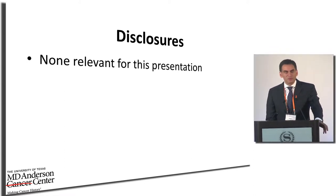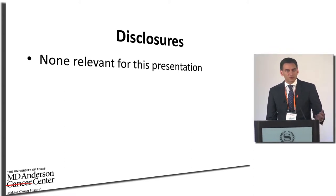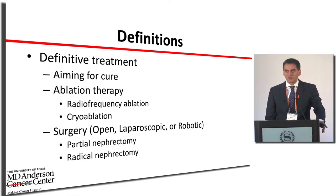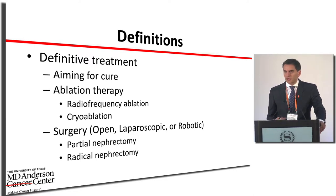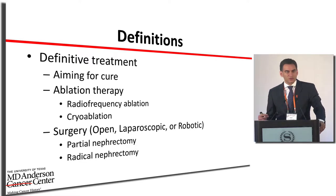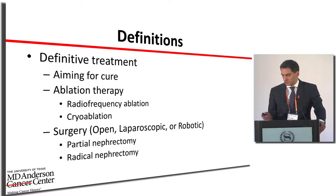For definitive treatment, what I mean by that is a treatment that was done aiming for a cure. These are treatments such as ablation therapy, which could be with cryotherapy, radiofrequency, or microwave, or with surgery, which could be either open, laparoscopic, or robotic. It could be a partial nephrectomy where we save part of the kidney, or a radical nephrectomy where we take the entire kidney out.